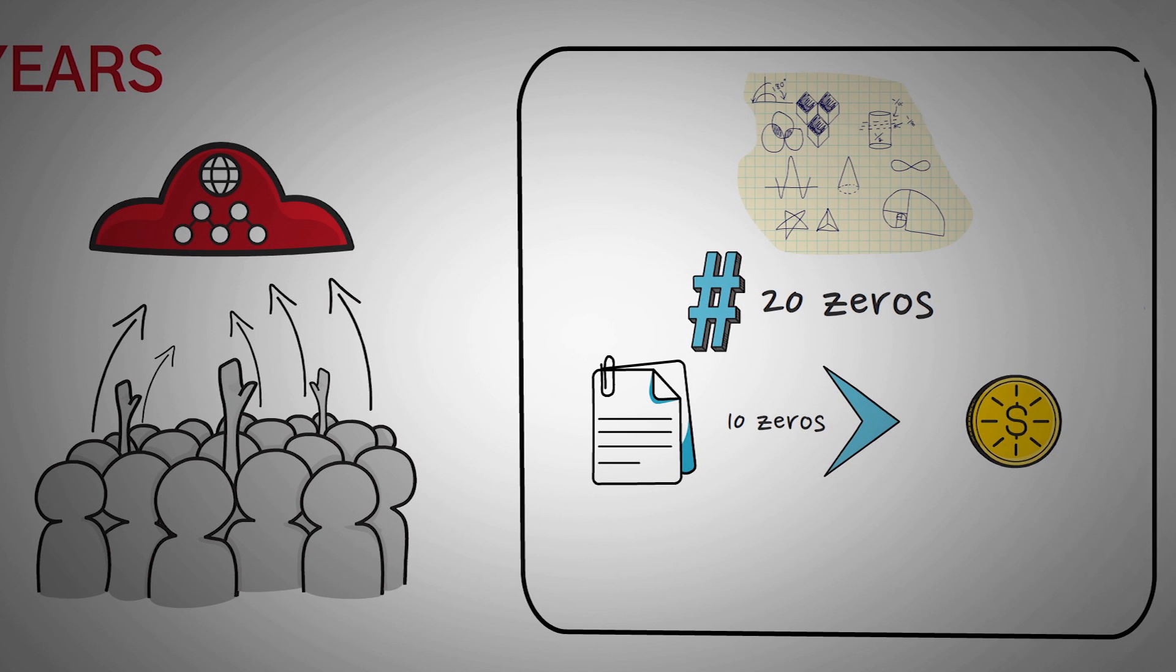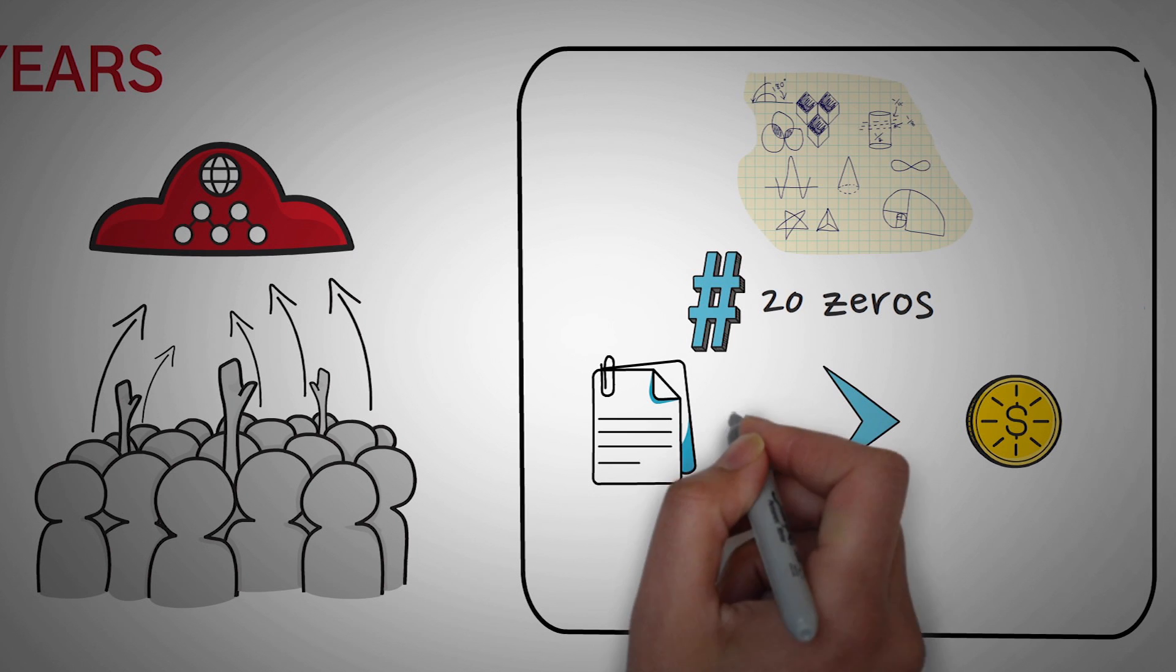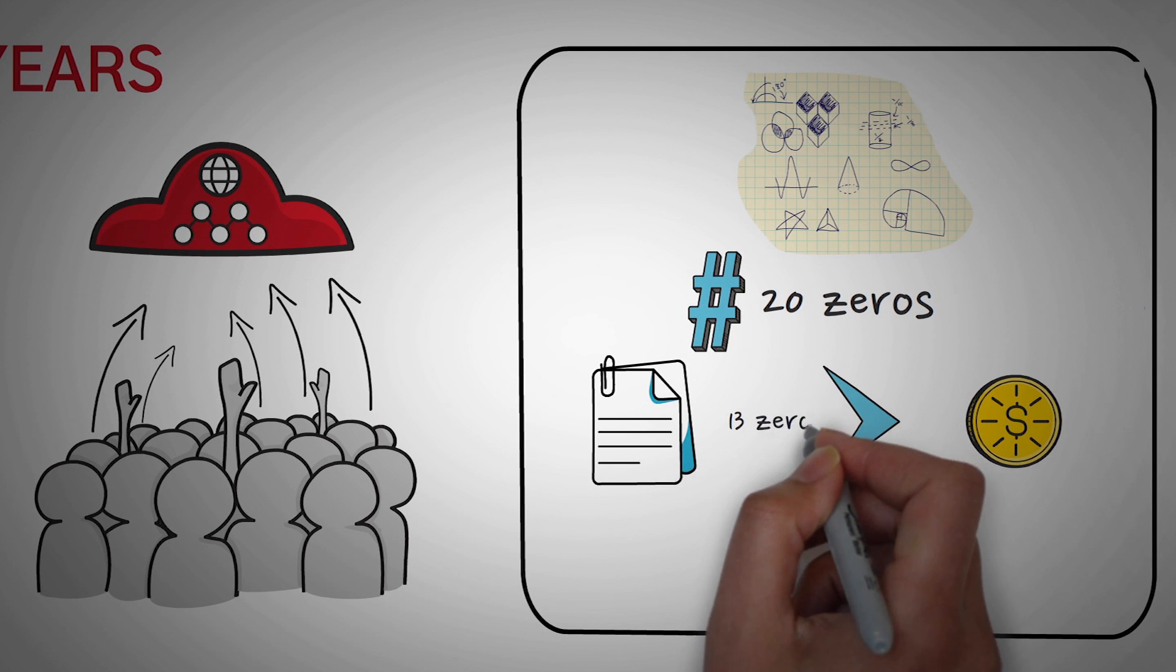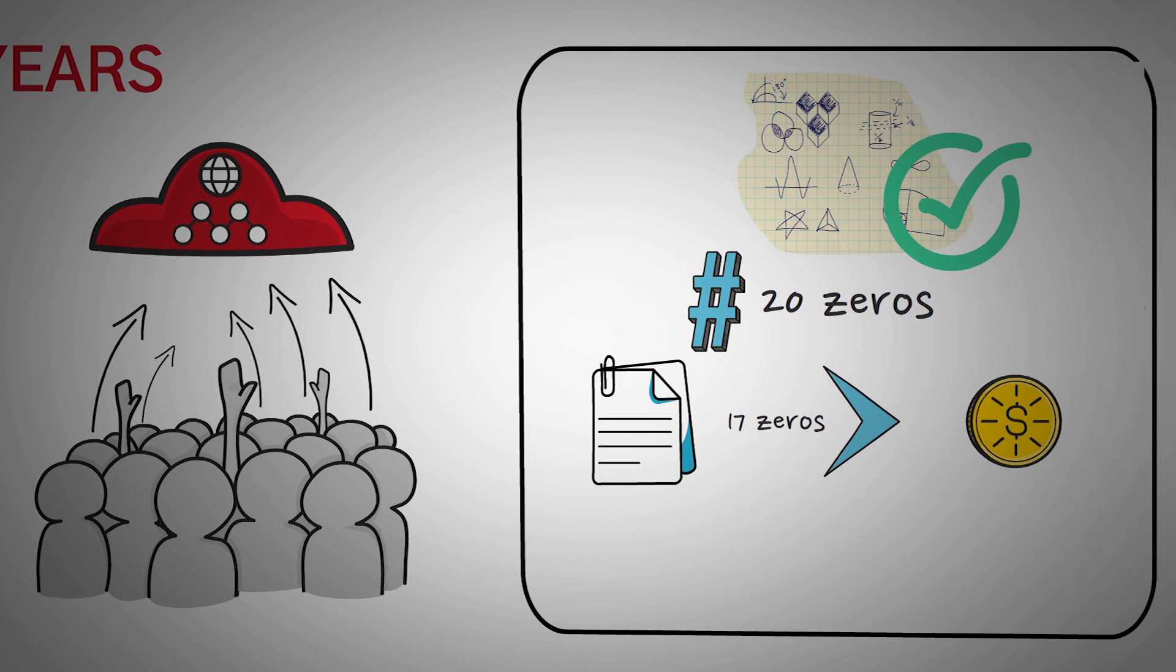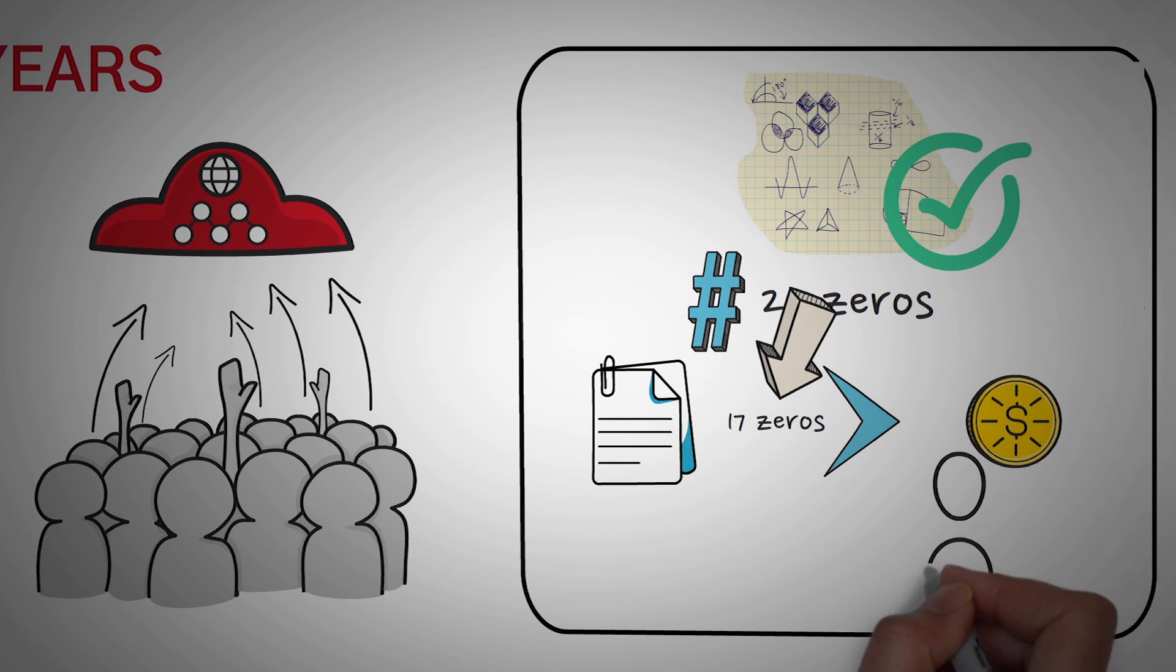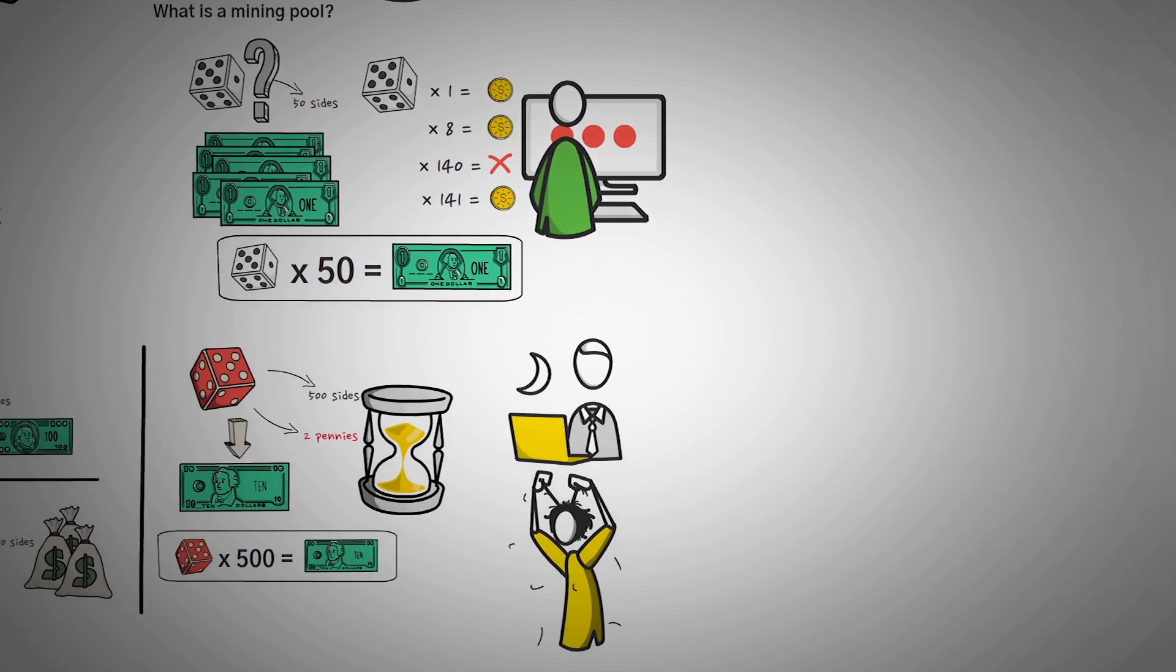So you're mining away and you find one with 10 zeros, one with 12 zeros, one with 18 zeros, one with 13 zeros, and one with 17 before someone else finds the solution to the block. Now since these shares prove that you were actually mining, we submit those as proof that we were working towards the solution instead of just having the pool take our word for it.